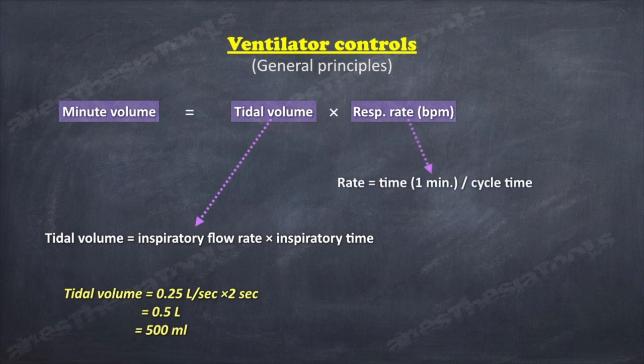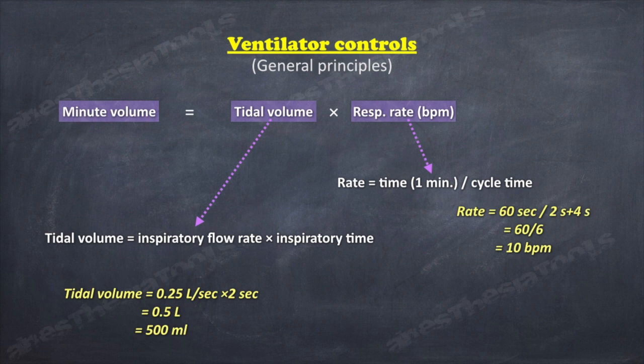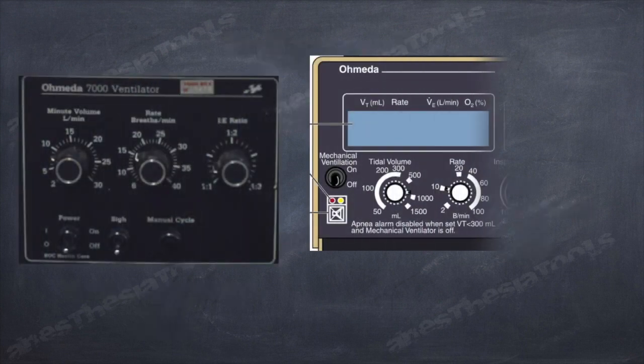The rate is derived from the cycle time and expressed as the number of complete cycles per minute. For example, if the inspiratory time is 2 seconds and the expiratory time is 4 seconds, then the total breath time is 6 seconds. So the rate equals 1 minute or 60 seconds divided by 6 seconds, that is 10 cycles per minute.